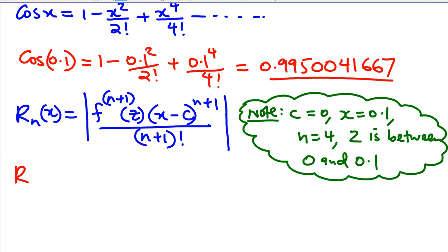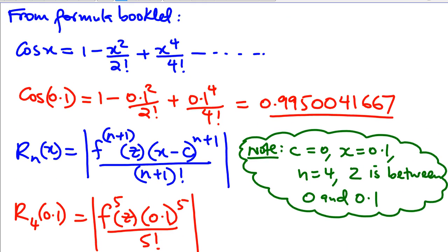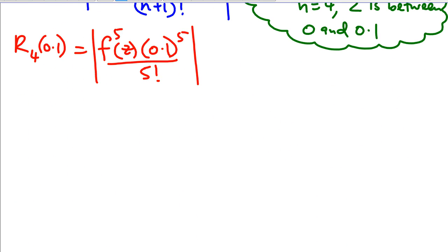So that means that R4 at 0.1 will be equal to the absolute value of the fifth derivative of F at z. We'll find out what it is. Now, x minus c, that will be 0.1 minus 0, which is just 0.1 to power 5 over 5 factorial. So the fifth derivative of cos x, we have to find that.